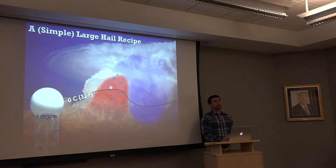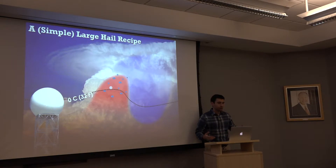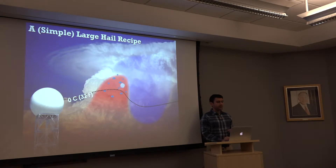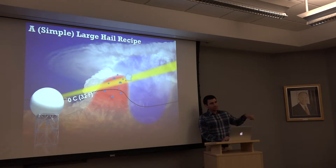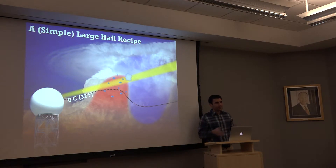Here's our large hail recipe: we have a cell with small and large raindrops in the updraft area, where we grow that hailstone by introducing a lot of liquid water to our growing ice particle. The hailstone moves and rotates through the updraft, taking long trajectories that give it lots of time to collect liquid water and grow bigger and bigger at sub-freezing temperatures.